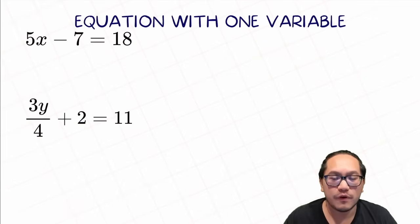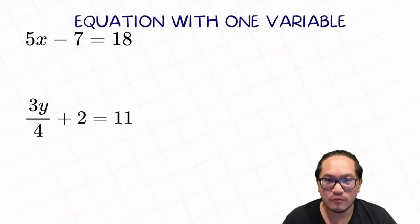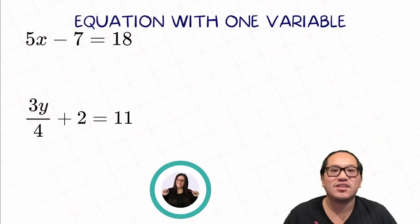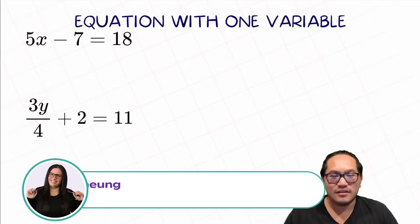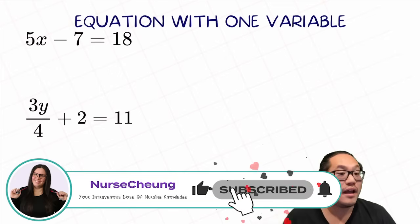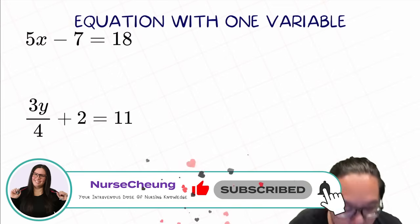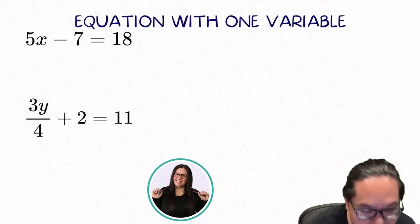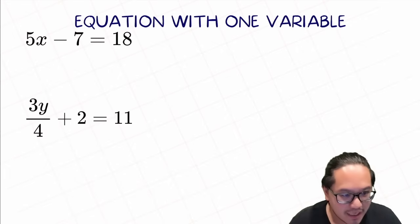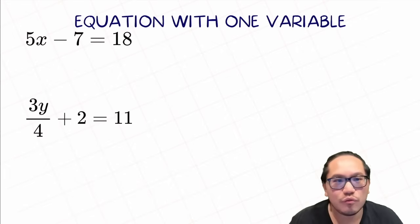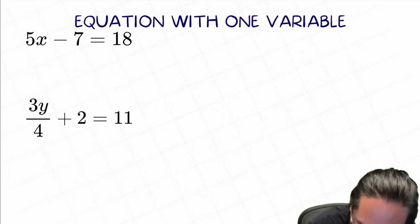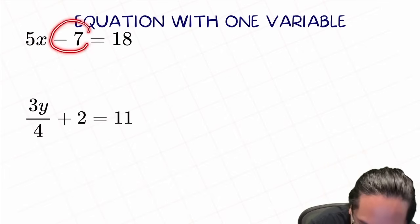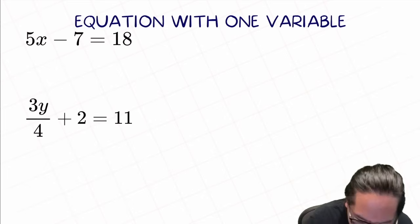With equations with variables, the main goal that we want to focus on is isolating x. So let's do some practice to see what I actually mean. The first example: we have 5x minus 7 equal to 18. The way to isolate x is we're trying to work through anything that is not directly connected to the x.